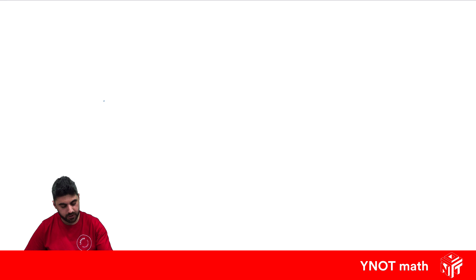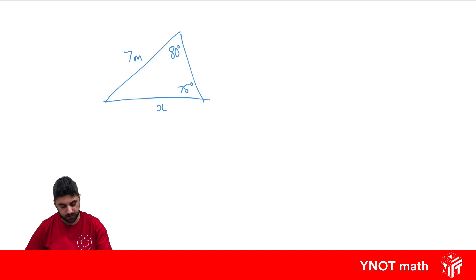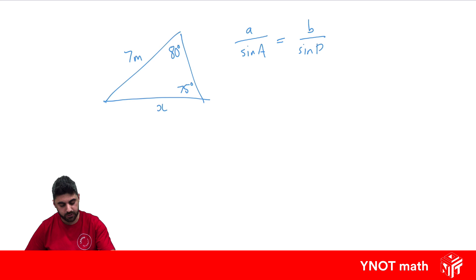Let's try a non-right angle triangle where one angle is 80 degrees, another is 75 degrees, one side is 7 meters, and the side we want to find is x. Since we're finding a side, we'll use the side version of the sine rule: a over sin A equals b over sin B. I'm just going to write two of them.